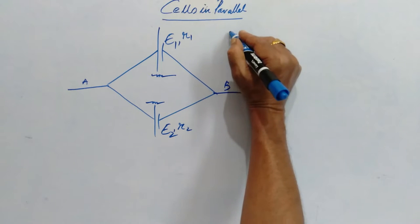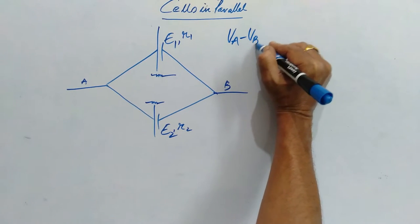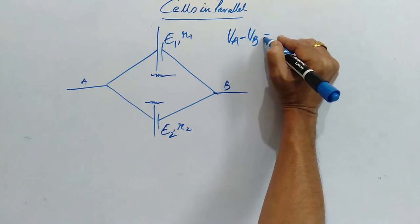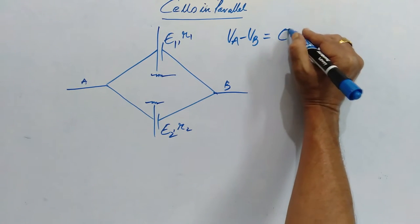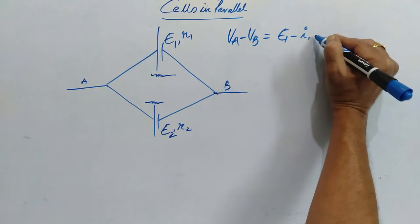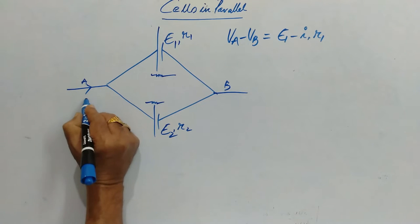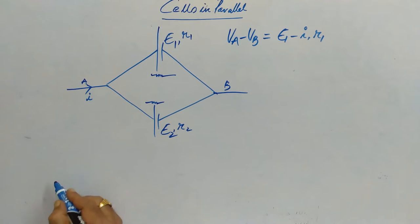I can write the equation as VA minus VB is equal to E1 minus I1 R1. What is I1? Suppose I current is coming here,